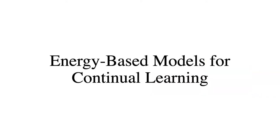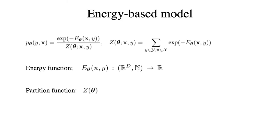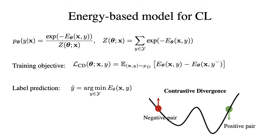In our paper, we propose to use an energy-based model as a building block for continual learning. In our energy-based model, we optimize the joint distribution of input image X and label Y. E is the energy function that maps the input image and label to a scalar value, and Z is the partition function for normalization. In practice, we found that the conditional probability already achieves good results. Inspired by energy-based model works, we propose to use the contrastive divergence training objective. Given an image, we hope the energy between the image and the ground-truth class label to be low, and the energy between the image and the negative class label to be high.